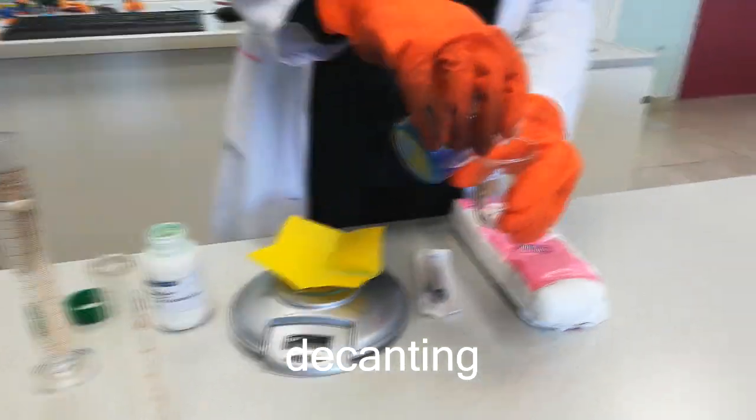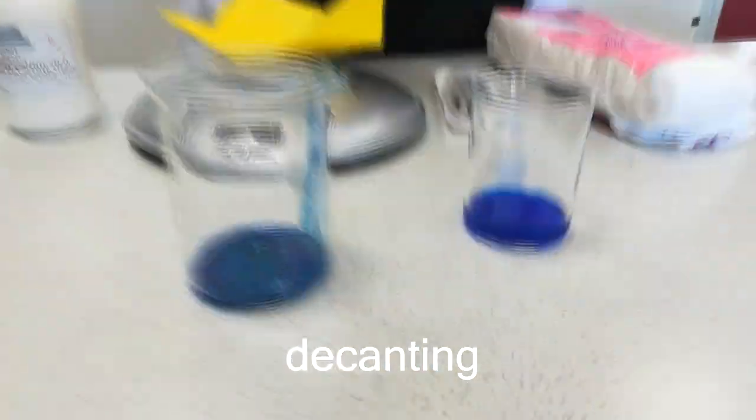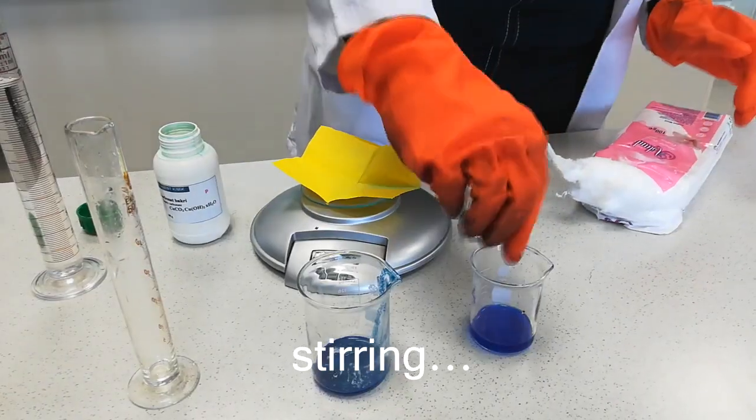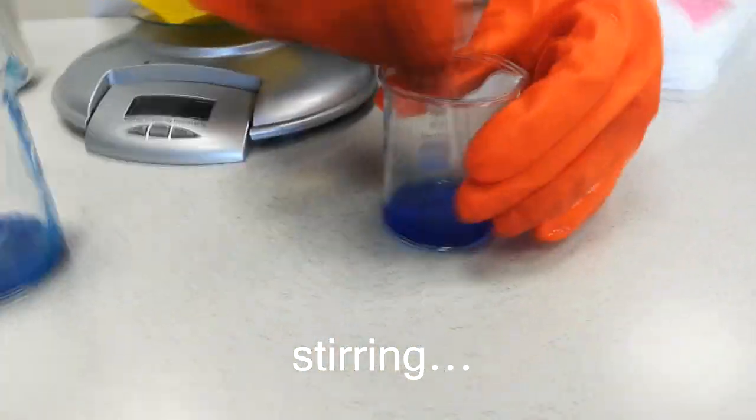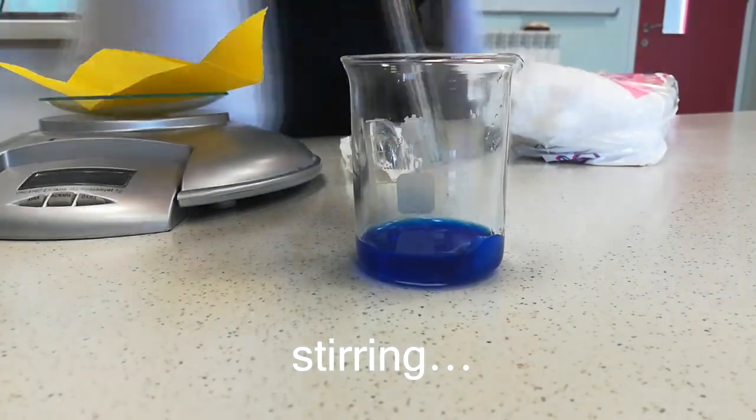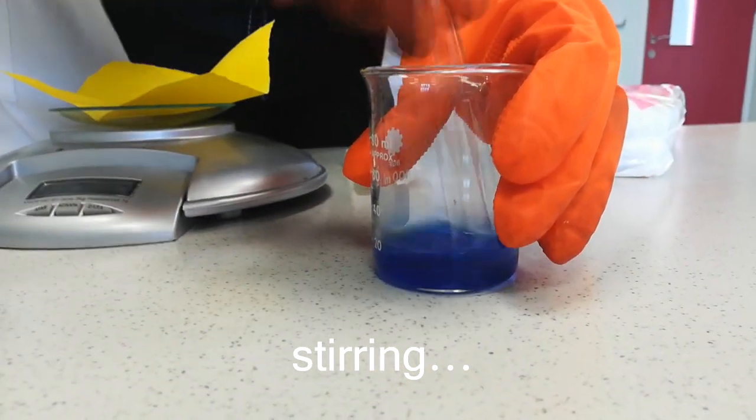Since a precipitate will form, we then decant the solution into a second beaker. After that, we add bits of cotton wool slowly while stirring until the solution becomes viscous. Stirring continues until there are no or few lumps left in the solution.